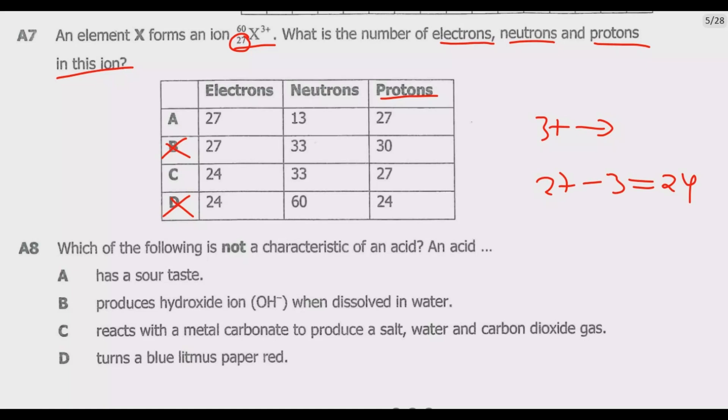So we need to have 24 electrons, so A is out, meaning only C. Then what is the number of neutrons? The number of neutrons will be the difference between 60 and 27, which is equal to 33. So you notice that this is 33, which is correct, and C is the correct answer. So this is how you answer question A7.